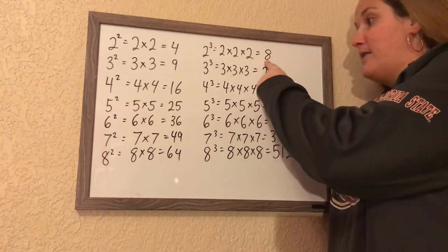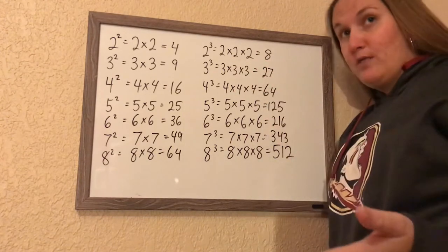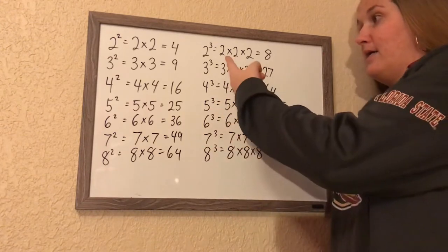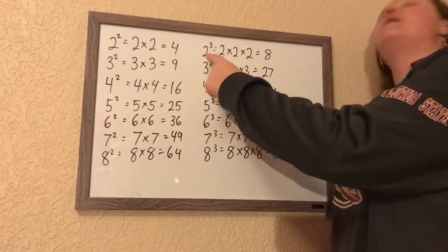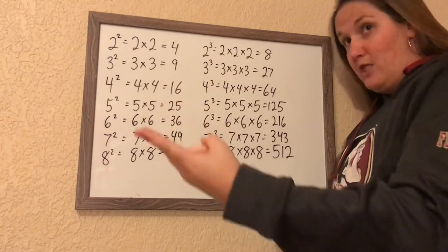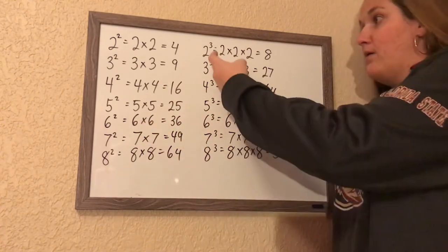So if I did 8 backwards, 8 divided by 2 is 4, divided by 2 again gets us down to 2. Or if I went through it forwards, 2 times 2 is 4, times 2 again is 8.